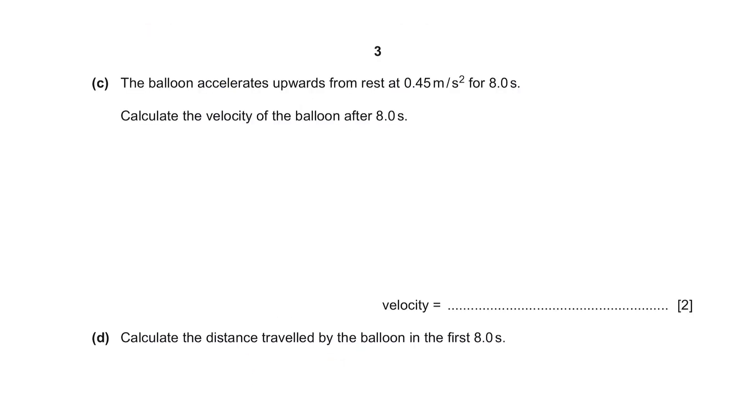Question C. The balloon accelerates upwards from rest at 0.45 meters per second squared for 8 seconds. Calculate the velocity of the balloon after 8 seconds. Whenever you are given a lot of information, your first step should always be to list down the known quantities. Next, you should have the ability to find the formula related to the values given. And here we will apply the formula of acceleration equals final velocity minus initial velocity over time. Substitute the values and you will get velocity equals 3.6 meters per second. Always do not forget to write your units.